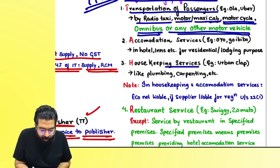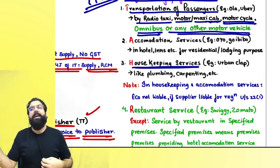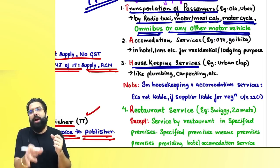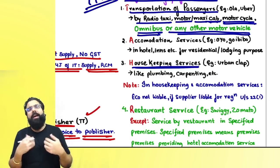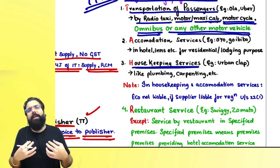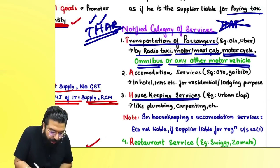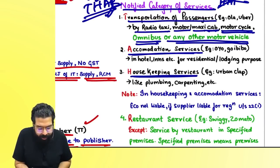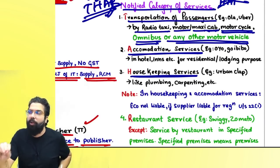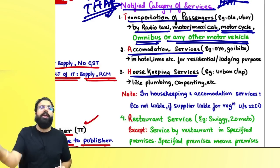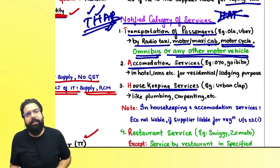For housekeeping services (e.g., Urban Company): if the supplier is liable to register under Section 22, the supplier pays GST; otherwise, the e-commerce operator pays. For accommodation services (e.g., OYO Rooms): if the supplier is liable to register under Section 22, the supplier pays; if not, the e-commerce operator pays GST under Section 9(5).